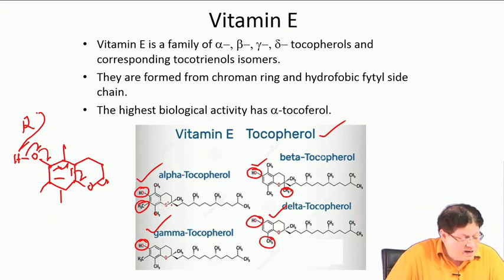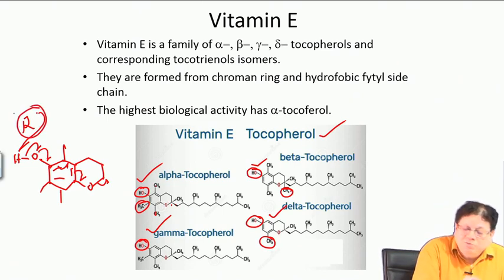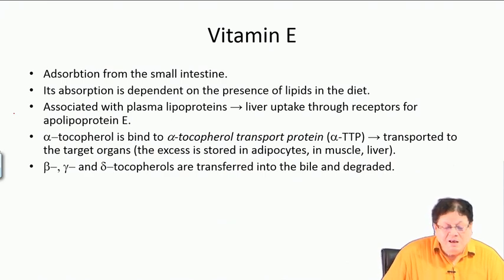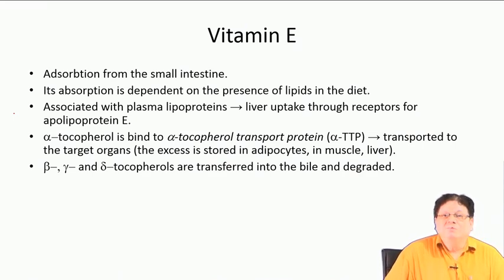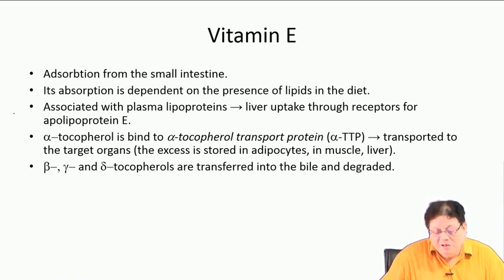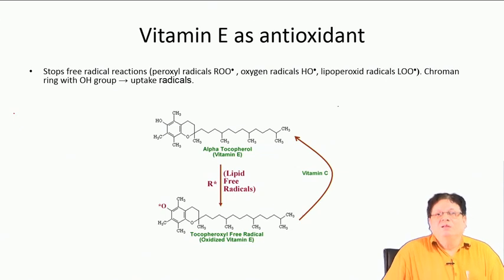These radicals are basically the outcome of reactive oxygen species. Vitamin E is very important because these radicals are associated with degenerative diseases and mutations — they can cause mutations in genes, leading to cancer, gout, aging, and other conditions.